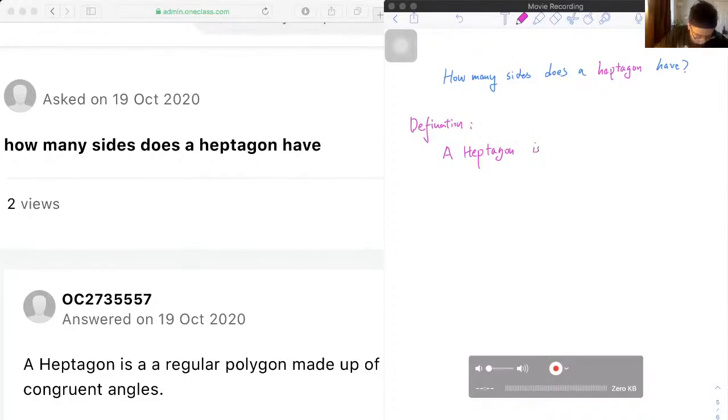A heptagon is a regular polygon made up of seven congruent sides and seven congruent angles.